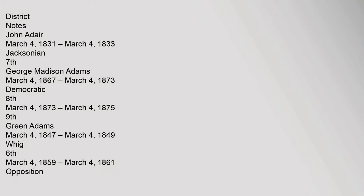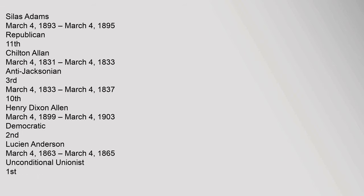John Adair, March 4, 1831 to March 4, 1833, Jacksonian, 7th. George Madison Adams, March 4, 1867 to March 4, 1873, Democratic, 8th; March 4, 1873 to March 4, 1875, 9th. Green Adams, March 4, 1847 to March 4, 1849, Whig, 6th; March 4, 1859 to March 4, 1861, Opposition. Silas Adams, March 4, 1893 to March 4, 1895, Republican, 11th.